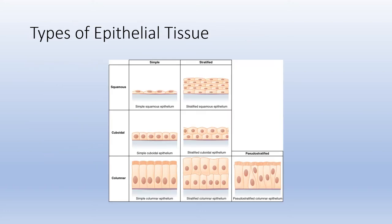These two classification criteria are combined together. You can have simple squamous — a single layer of flattened cells — or stratified squamous, which is multiple layers. Likewise, you can have simple cuboidal, stratified cuboidal, simple columnar, or stratified columnar. Whenever you see simple, think one layer; stratified means two or more layers. Squamous, cuboidal, and columnar describe the shape of the cell.